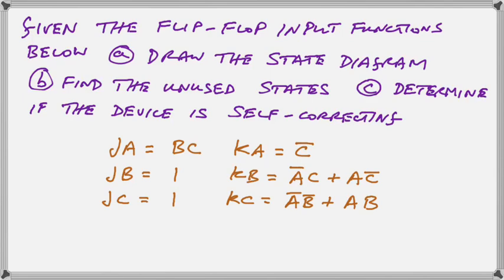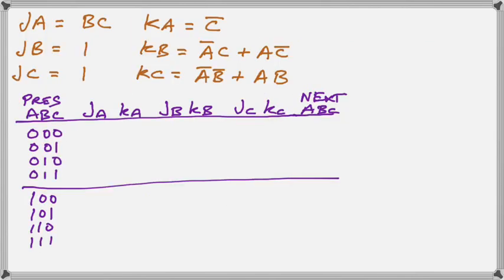So there are our flip-flop input functions. What are we going to do with them? First, we have to draw this table where we have the present state on the extreme left and the next state on the extreme right. In between, we're going to write those input functions in terms of what they actually mean.